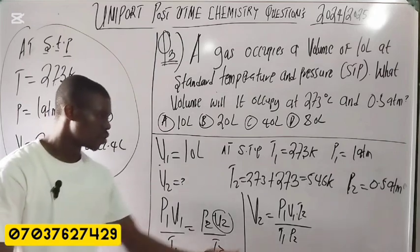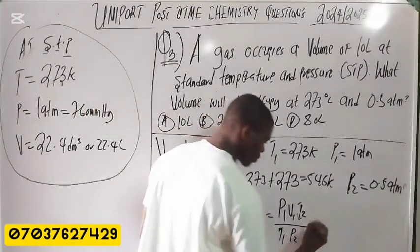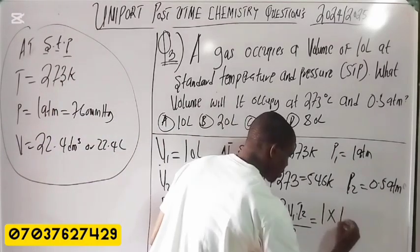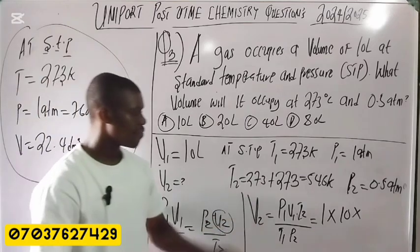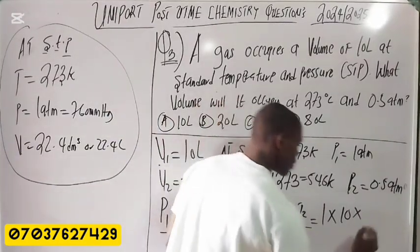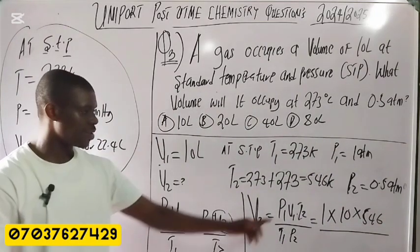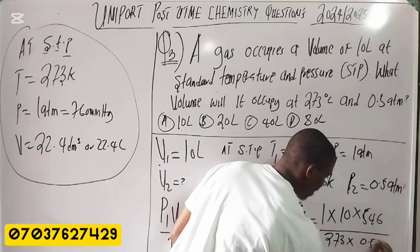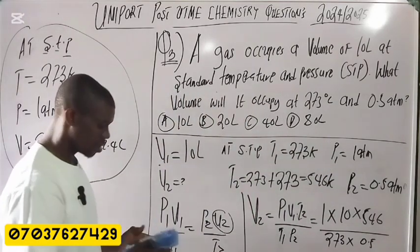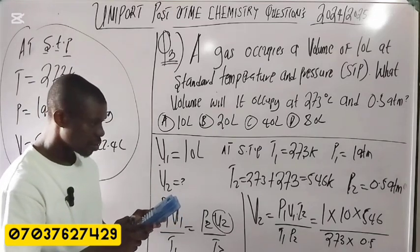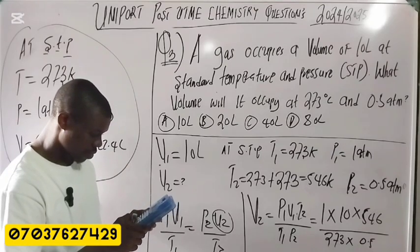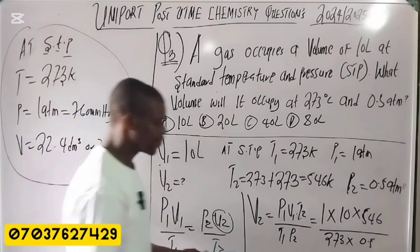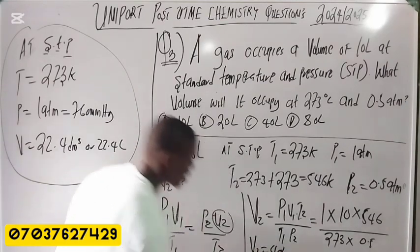Substituting values: P1 = 1 atm, V1 = 10 liters, T2 = 546 K, T1 = 273 K, P2 = 0.5 atm. So V2 = (1 × 10 × 546) / (273 × 0.5). Using a calculator: the answer is 40 liters. So V2 = 40 liters.